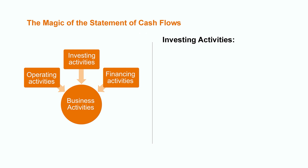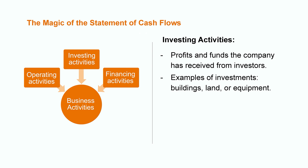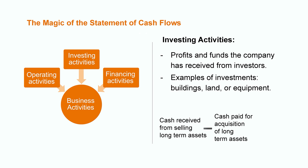Investing activities give external users information about how a company is using the profits they've received from investors. If a company spends money on a new building, some land, or equipment, this would all fall under a company's investing activities. On the statement of cash flows, we would see the total cash flow from investing activities reflected by all the cash received from the sale of long-term assets, less any cash paid out to acquire any new assets that period.